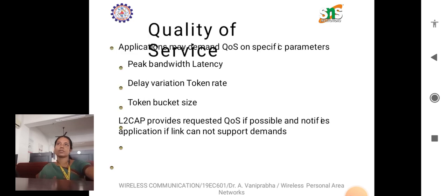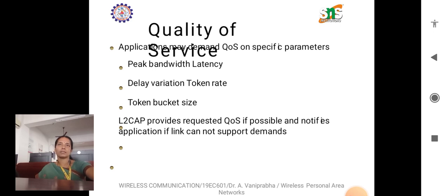The next topic of discussion is Quality of Service. Quality of Service refers to the ability of a network to provide different priority levels and service guarantees to different types of traffic. In Bluetooth, QoS mechanisms ensure that critical data such as voice packets on the SCO link receive higher priority and are delivered with minimal delay or even no delay.